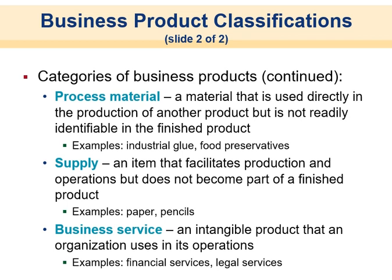A supply is an item that facilitates production and operations but does not become part of a finished product — like office supplies, paper, or pencils. And then there are business services, intangible products an organization uses in its operations, like legal counsel or a CPA who helps with financial services and taxes.